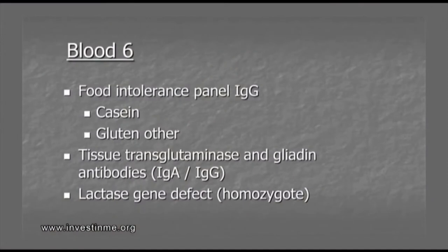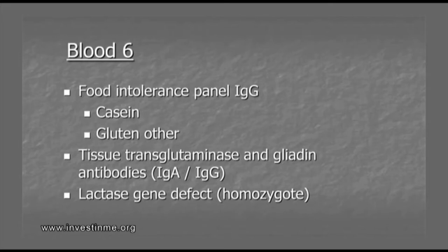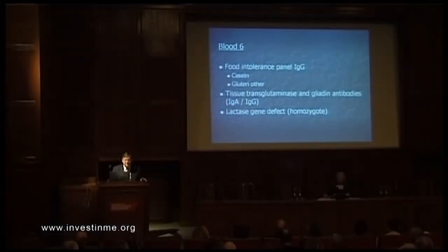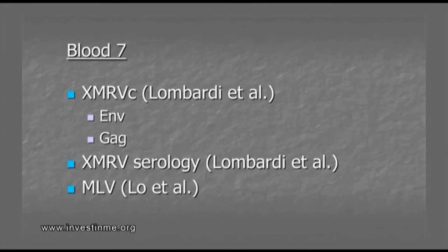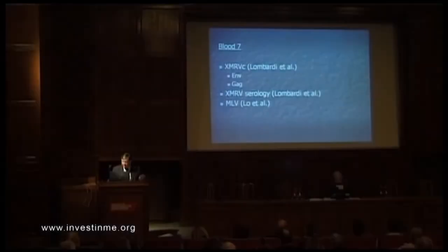When we do a food intolerance panel, we see sometimes extreme abnormalities. People really have leaky gut and food intolerances for most foods when we test for 96 foods. We can often see in families a genetic trait — people are intolerant to casein. For gluten, that can be genetic but also acquired. We can make the difference by measuring tissue transglutaminase and gliadin antibodies. We now also measure XMRV and XMRV serology, which we send to the United States, and we've also measured routinely the MLVs as described by Lo.